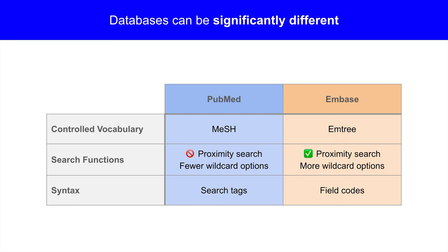Let's compare PubMed to Embase. PubMed's controlled vocabulary is MeSH, while Embase uses EmTree terms. With search functions, PubMed does not allow proximity searches and has fewer options for wildcard searching. On the other hand, Embase has more options available.